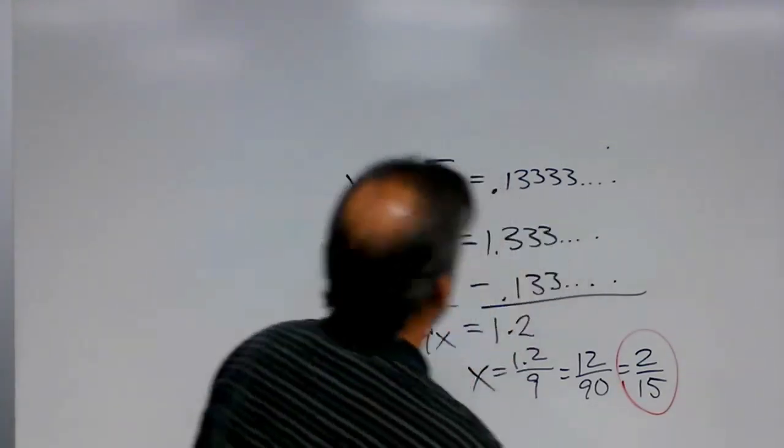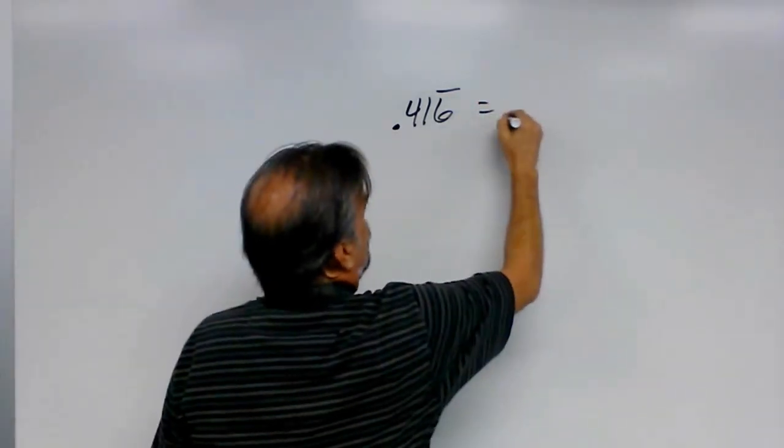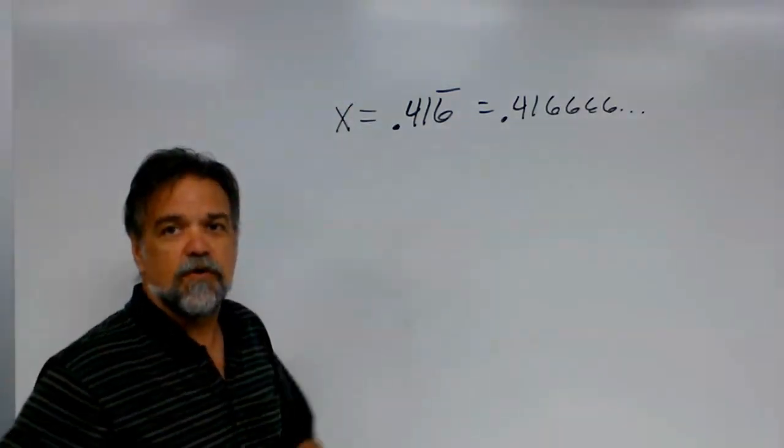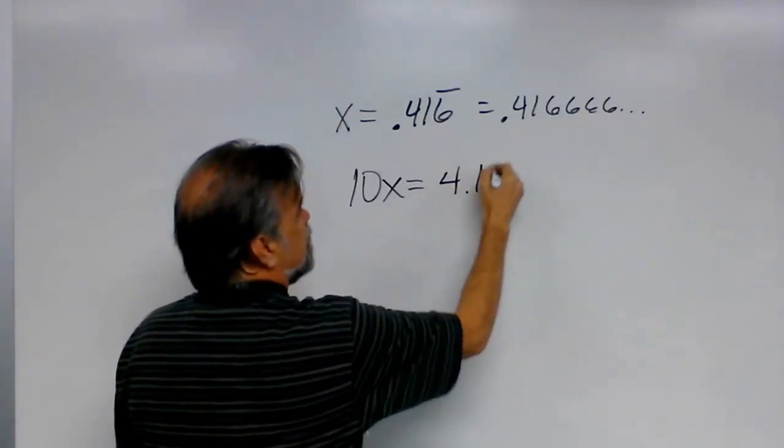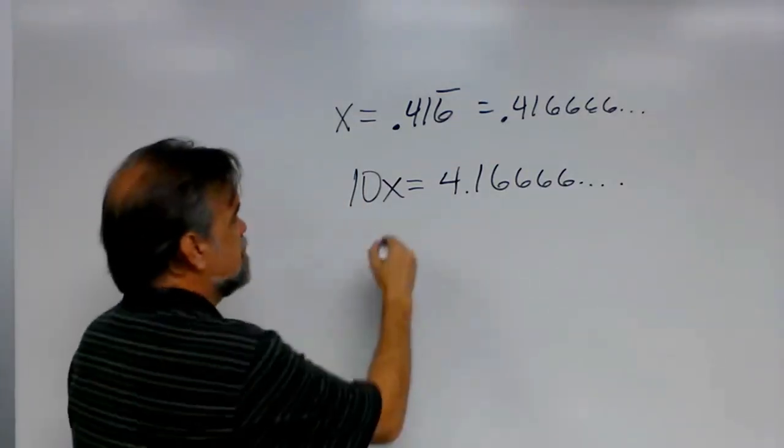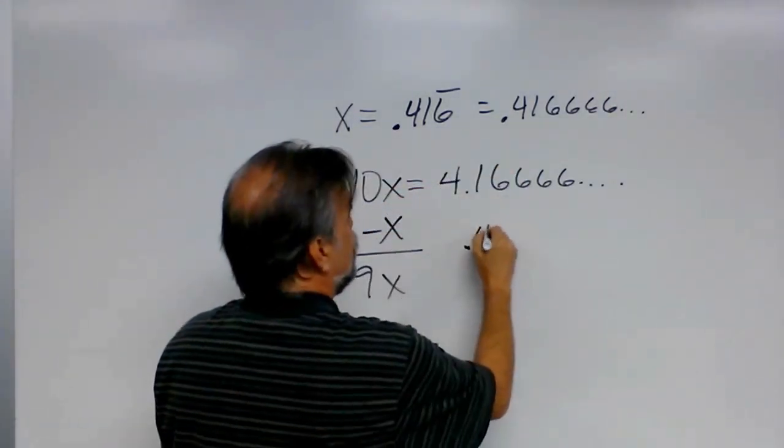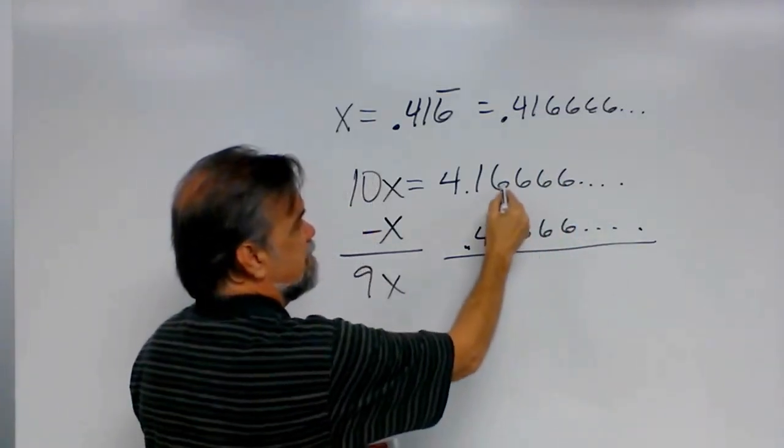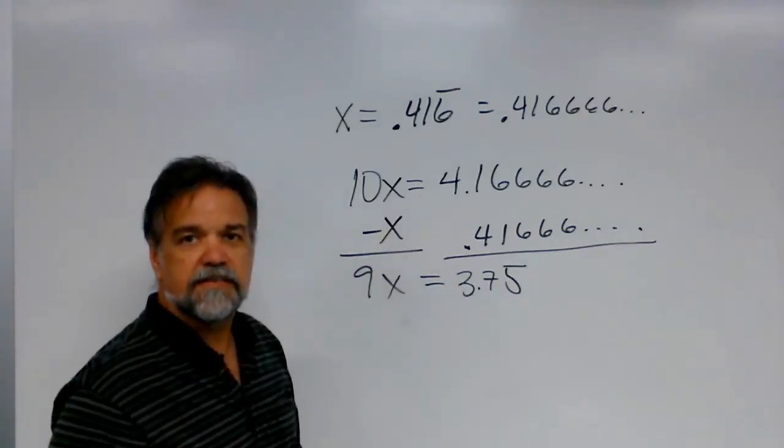You want another one? I can tell. Let's look at another one. Let's try 0.416 bar. In other words, 0.416666, etc. That's what x is going to be this time. So, same thing. What do I multiply x by? 10. 10 times x equals 4.16666, etc. And again, I'm going to subtract x from this side and get 9x. And again, I'm going to subtract what x equals, this 0.416666, etc., from this side. And what do we get? 6 minus 6, nothing. 6 minus 6, nothing. 6 minus 6, nothing. 6 minus 1 is 5. And 41 minus 4 is 37. So, I get 3.75. That's what 9x equals.